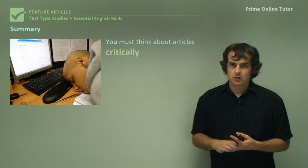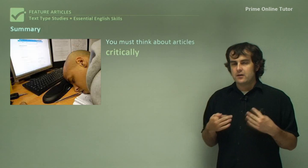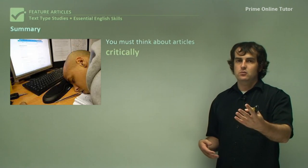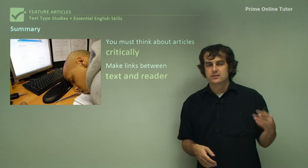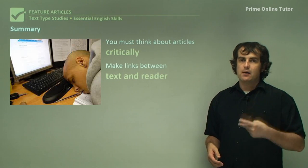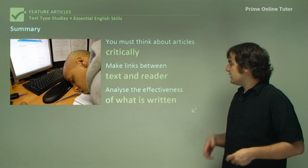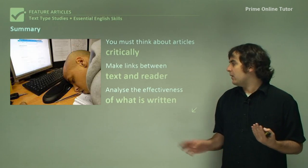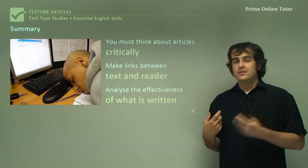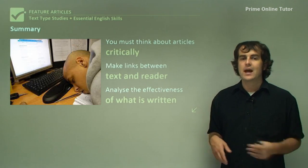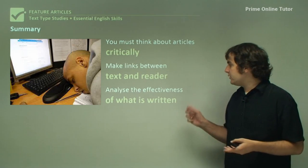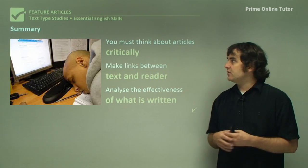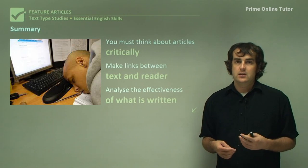In summary, you must think about articles critically. Be critical of what happens between the journalist's hand and what you read. Make links between the text and the reader — how it talks to its audience directly. Analyze the effectiveness of what is written, whether it actually creates an effect and gets its point across, and discuss how effective the writer is in delivering it. That's it for feature articles and how to write about them.